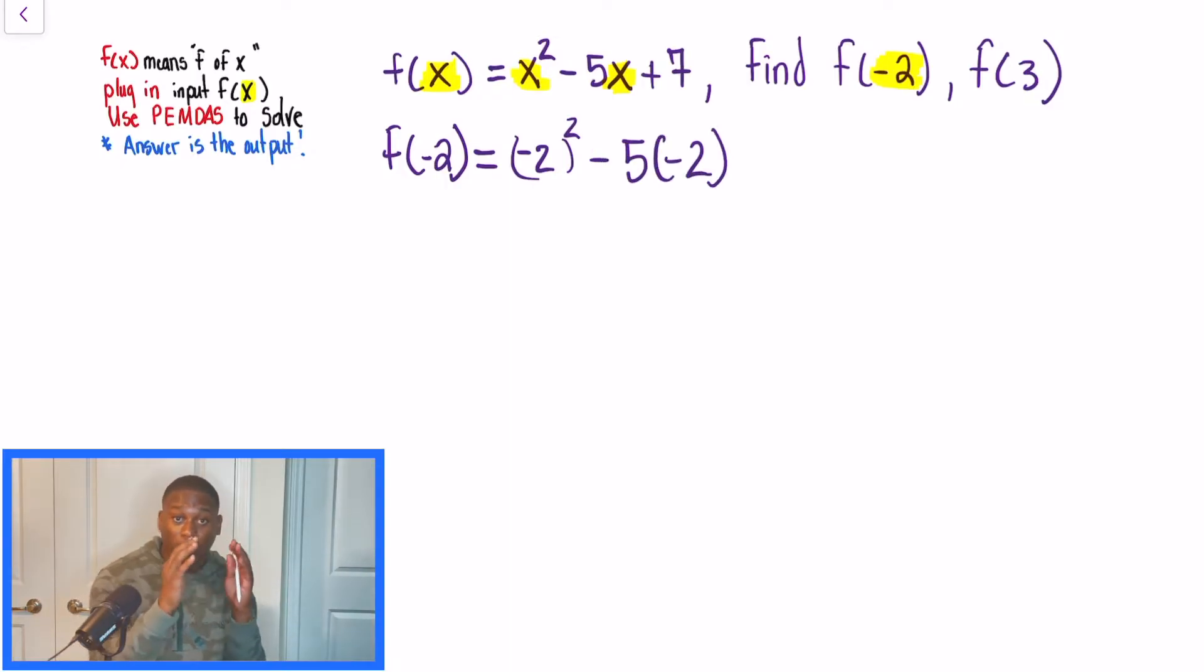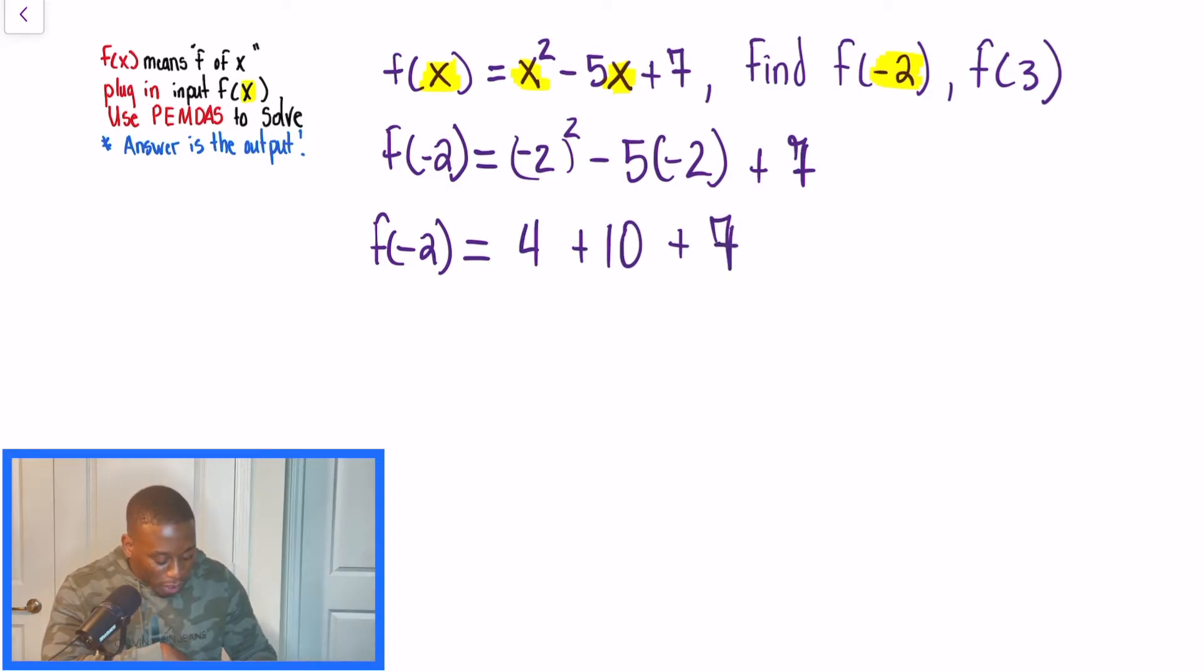We need to make sure we take that number inside the parentheses and plug it into our function. Now that we've done that, this problem becomes a lot more simpler. We're going to use order of operations and simplify the right-hand side. The left-hand side, f of negative 2, will stay the same. So f of negative 2 is equal to 4 plus 10 plus 7. And when we add this all up, our answer is going to be... Oh, I'm sorry, quick mental break, I overthought the problem. 21. So this is our answer right here.